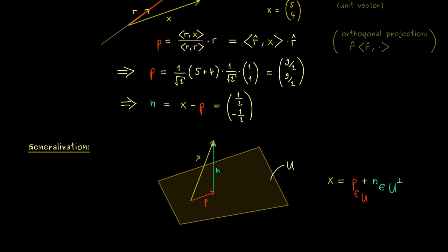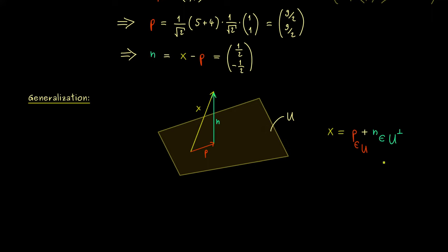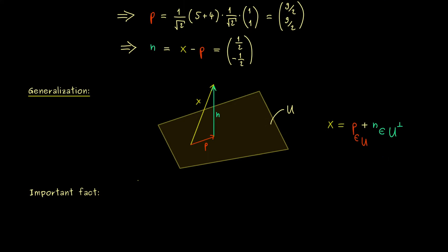Indeed, the proof we wrote down in the last video works exactly the same in this general case. And what it also shows is an important relation between the subspace U and its orthogonal complement. So it's definitely something you should remember. The intersection of U and U-perp is almost empty. The only thing they have in common is the zero vector. And this is not a surprise, because both things here are subspaces.